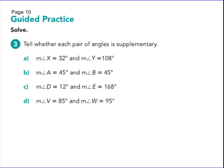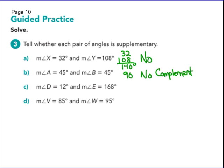More pairs: 32 and 108 makes 140 — not supplementary, so no. 45 and 45 adds to 90 — that is no, because those are complementary, not supplementary. 168 and 12 does add to 180 — yes, supplementary. 85 and 95 also adds to 180 — yes, supplementary.